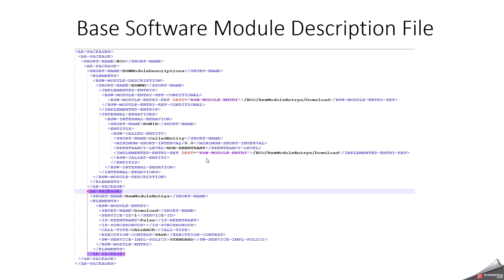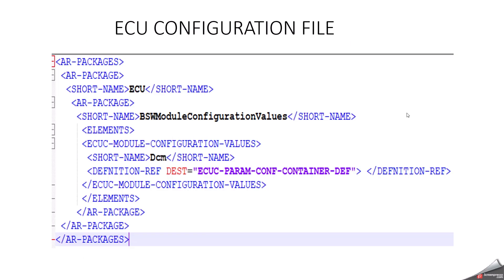For the ECU Configuration file, I have taken DCM as an example, but the same structure applies for DEM, NVM, and everything else. Your configuration is based on the parameter definition file, and based on multiplicity you can do the configuration. Whenever you are doing configuration in AUTOSAR — whether using ETAS, Vector, or any other stack — finally these kinds of files will be generated, or whenever you do modifications they will be reflected in such files.